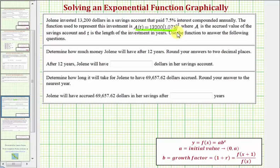Where the account balance can be modeled by our function A(t). So using A(t), we want to determine the account balance after 12 years, and then the second part, determine how long it will take for Jolene to have $69,657.62, which we'll solve graphically.